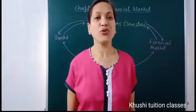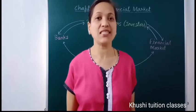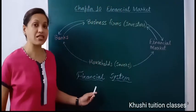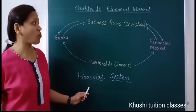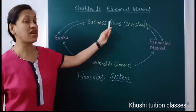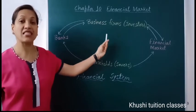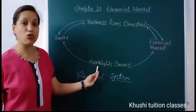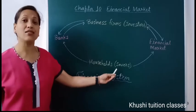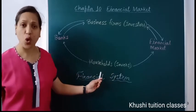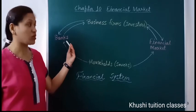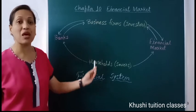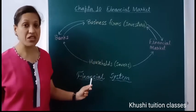Good morning friends. Now we are going to start with the 10th chapter of business studies, that is financial market. First we try to understand the financial system. In any economy there are two sectors: business firms, meaning investors who invest money in productive activities, and households — we people who save our surplus money in different options. In the economy there are two mechanisms — banks and financial market — which are intermediaries linking households and business firms.